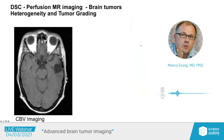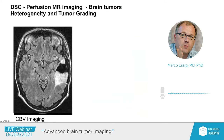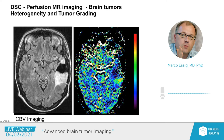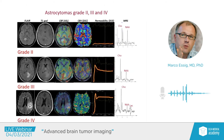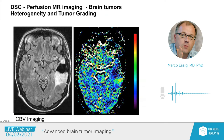In another patient who had previous surgery for a low-grade tumor, there is recurrence at the borders of the resection cavity — a very homogeneous tumor. We want to know: is this still low-grade or high-grade? Because those patients are managed differently. Adding perfusion reveals an area of high blood volume and blood flow representing a high tumor grade. This patient was diagnosed with a high-grade tumor and received completely different treatment than if it had been low-grade.